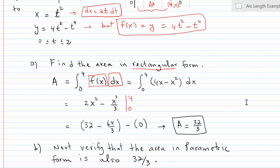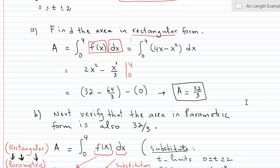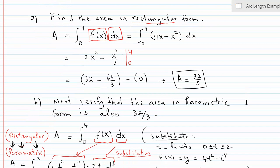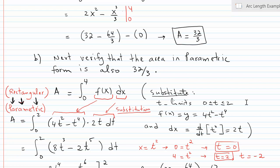If you go to a graphing tool and graph that parametric equation, changing your interval for t from 0 to 2, you should be able to see the parabola shown at the top. It is important that when you're setting up the area under a curve for a parametric equation, you do know what it looks like in rectangular form first.